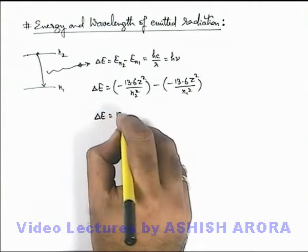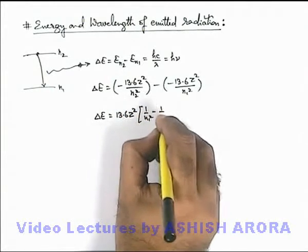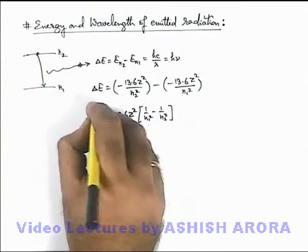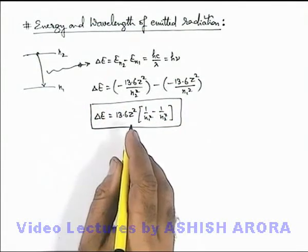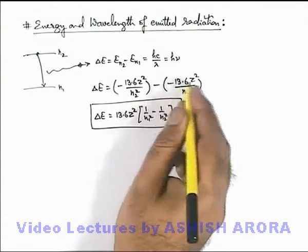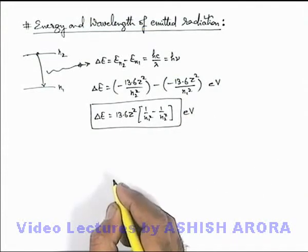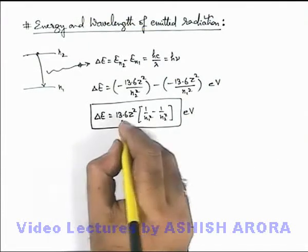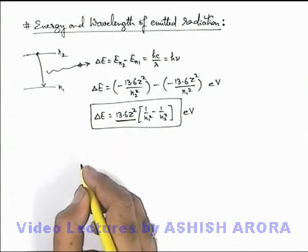So on simplifying we are getting delta E is equal to 13.6 z square, 1 by n1 square minus 1 by n2 square. This is the expression we can directly use to calculate the energy of emitted photon. And as we have substituted the energy in 13.6 electron volt units, so the result will be in electron volts. And here 13.6 z square we can write as ionization energy of a hydrogenic atom.